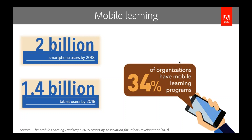Mobile learning is really important. By 2018, there will be around 2 billion smartphone users — a huge number for training organizations to tap. Also, while tablet sales have gone a bit down, by 2018 there will still be 1.4 billion tablets available. So it makes sense for training professionals to make their trainings available on mobile devices.